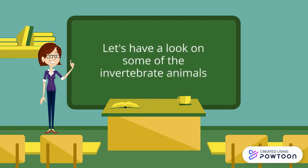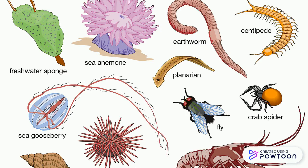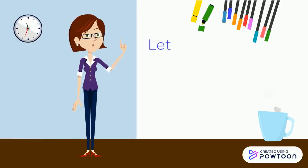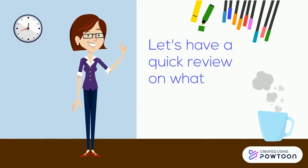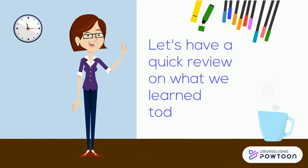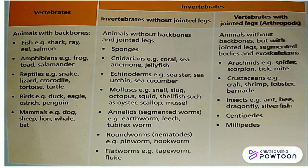Let's have a look at some of the invertebrate animals. These are some of the examples of the invertebrate animals. Let's have a quick review on what we learned today. This is a chart showing what kind of animals can be found in each classification.